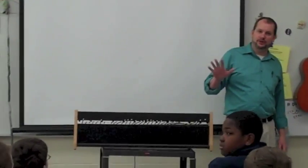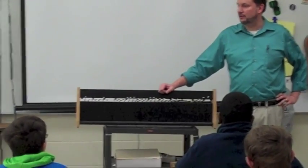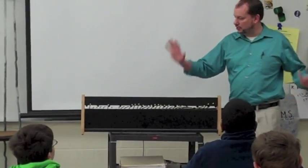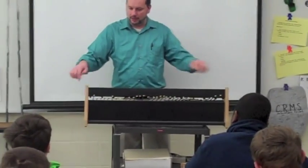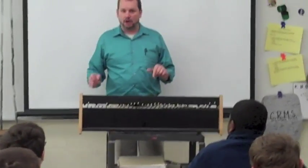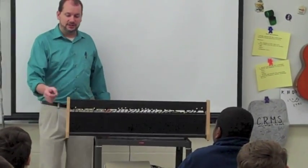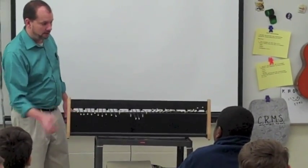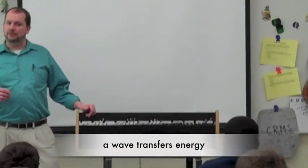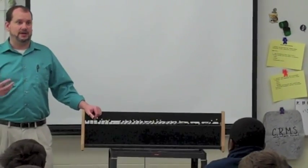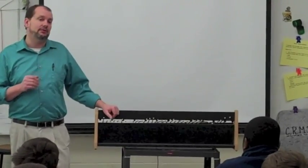This is the wave machine. The wave machine is a really nice way of showing things about a transverse wave. There's a wire that goes all the way across here, and all of these rods that go across are actually all attached to that wire. So if I make a movement down on this end, it transfers that energy. Waves are all about transferring energy from one side to the next.